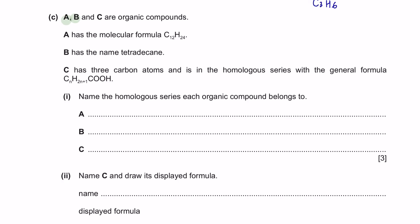Question C. A, B, and C are organic compounds. A has the molecular formula of C12H24. 12 to 24 is directly times two, so it must be CnH2n. This is an alkene. B has the name tetradecane. It ends with 'ane' so this must be an alkane. C has three carbon atoms and is in the homologous series with the general formula CnH2nCOOH. COOH is a carboxylic acid. Question part 1: Name the homologous series each organic compound belongs to. So it's alkene, alkane, and carboxylic acid.